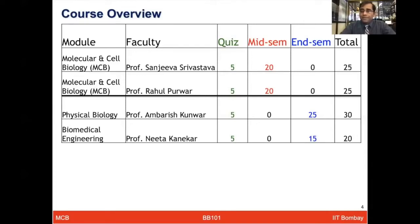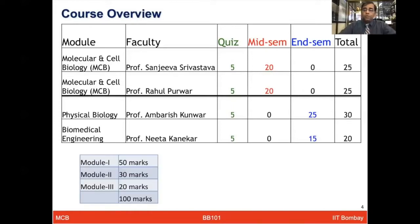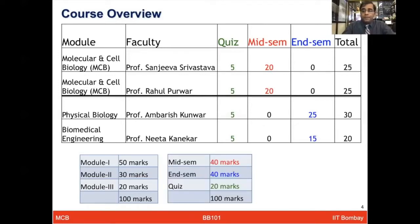Each MCB section will be 20 marks, giving 50 marks total before Midsem. After Midsem, Professor Ambarish Kumar's module will have 25 marks for the end-sem, and Professor Neeta Kanekar will have 15 marks. So module 1 has 50 marks, module 2 has 30 marks, and module 3 has 20 marks. To pass the course, a minimum of 30% is required.